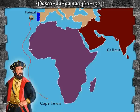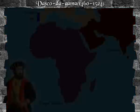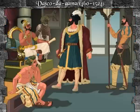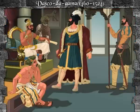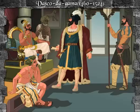Vasco da Gama was the first to sail from Europe to India. He landed in Calicut, the southwest of India, in May 1498. In India, Vasco da Gama was received by King Zamoran. The Portuguese began trading.